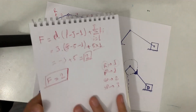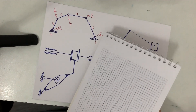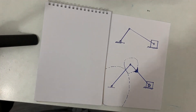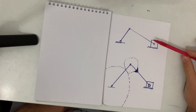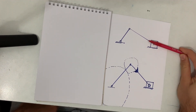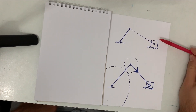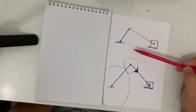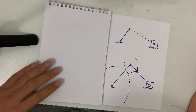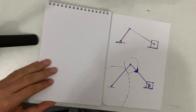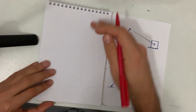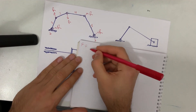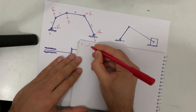Now let's start our second example. This is the slider-crank mechanism, which is also very common in mechanism classes and in real life — engineers use this mechanism a lot. Now let's find the degree of freedom. I'll write the formula again so you can memorize it.